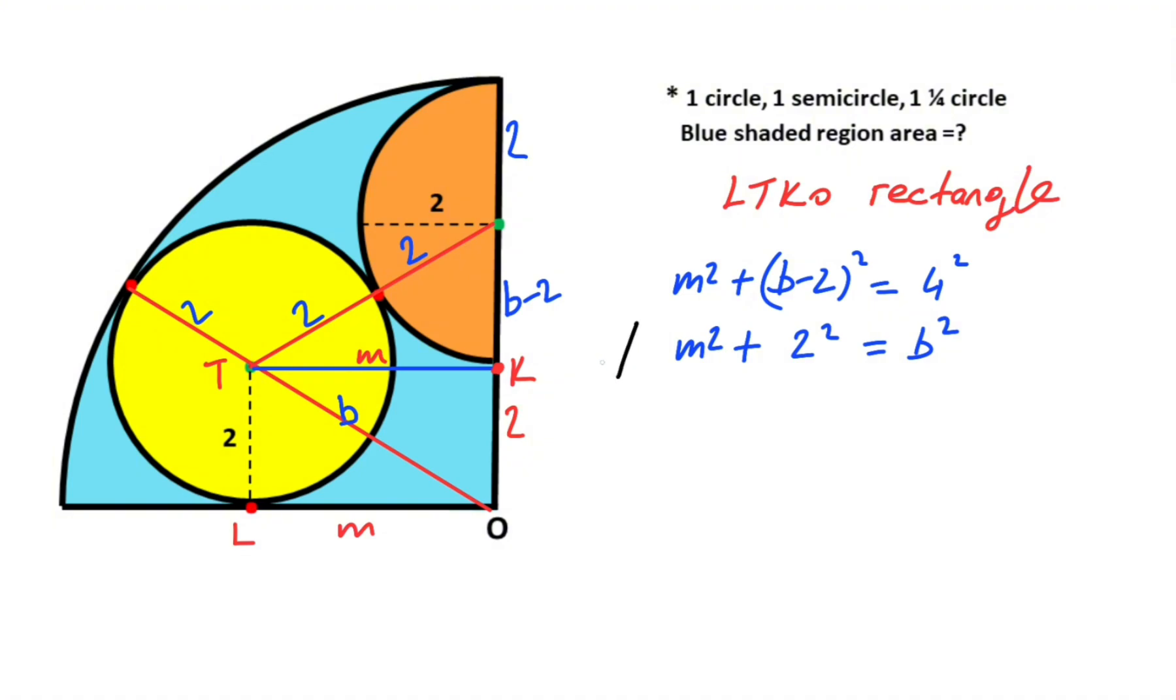Then if you multiply the second equation by minus one, these terms become negative, right? Okay, so if we add these two equations together, we get b squared minus 4b plus 4 minus 4 equals 16 minus b squared, right?